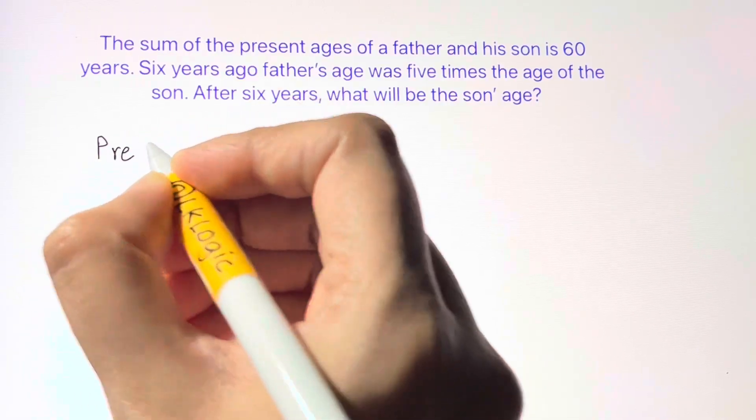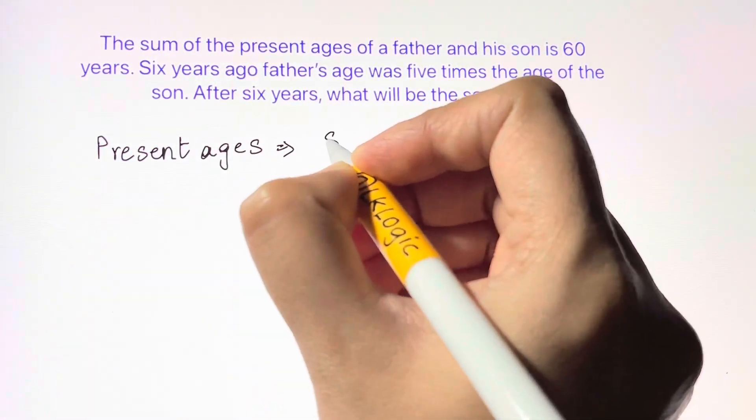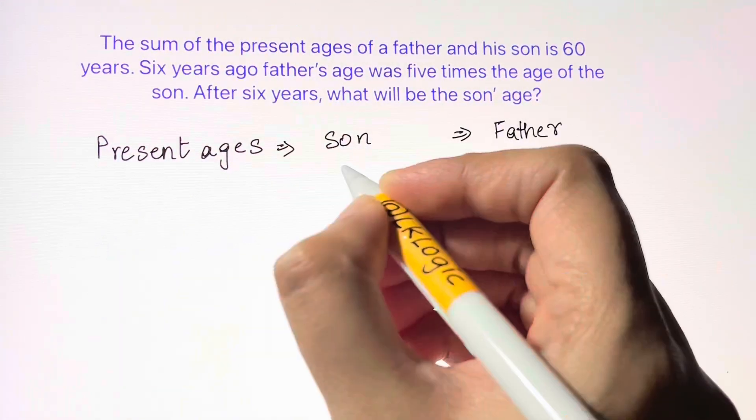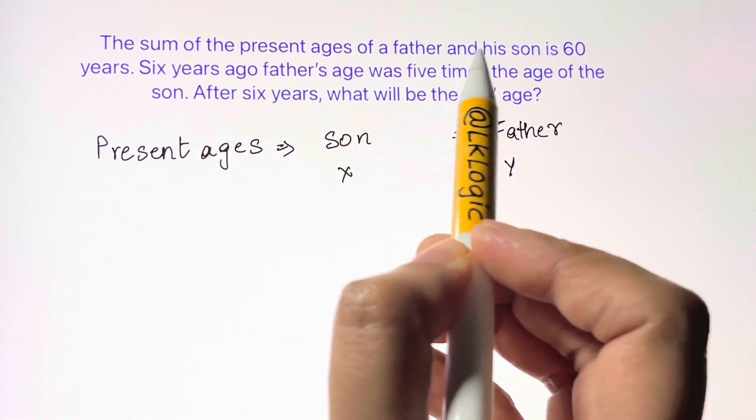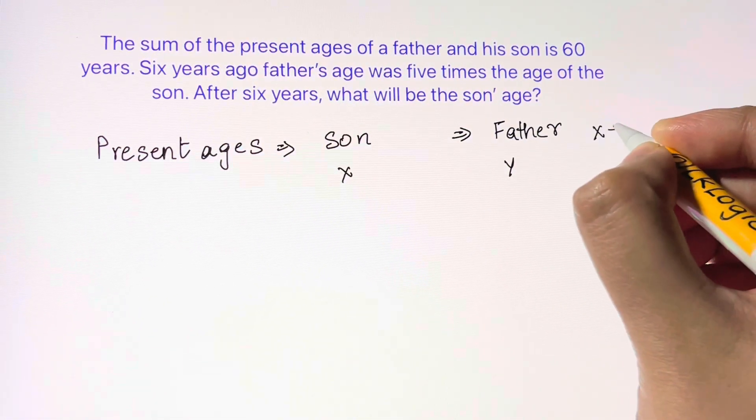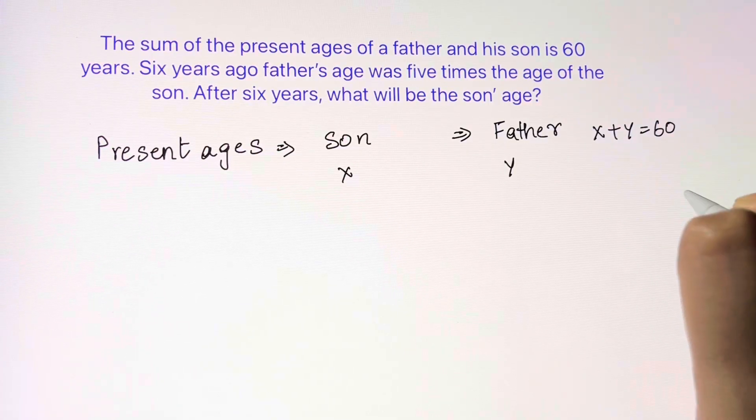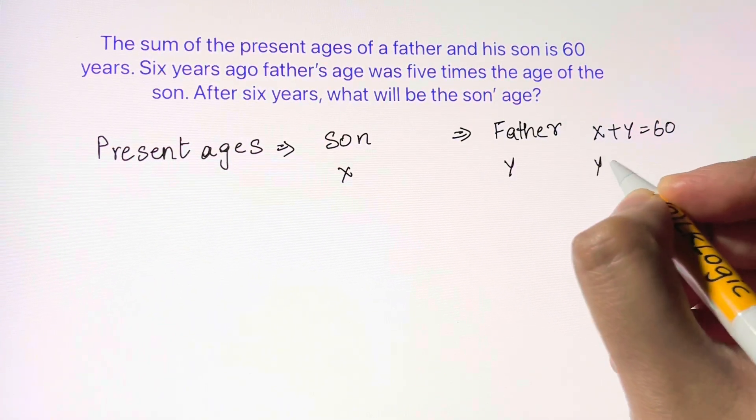Let's write down the present ages of son and father. Let the son's age be x and the father's age be y. Given the sum of present ages is 60, we have x + y = 60. From here we get y = 60 - x.